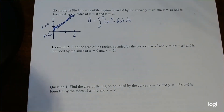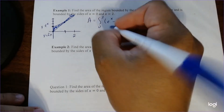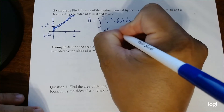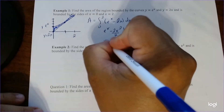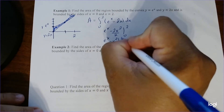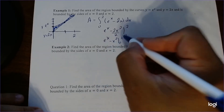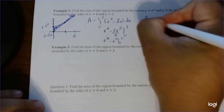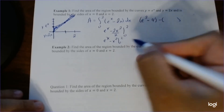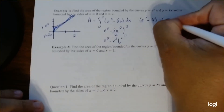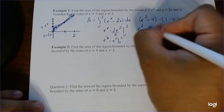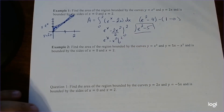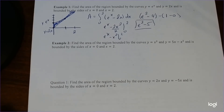Now we just take the integral and evaluate at those two values. The integral of e^x is e^x. The integral of 2x is 2x²/2, which simplifies. So we get e^x minus x², evaluated from 0 to 2. Plugging in 2: e² minus 4. Plugging in 0: e⁰ is 1, and 0² is 0, so that's just 1. So the area equals e² minus 4 minus 1, which is e² minus 5. You can leave it like that or compute the decimal value by plugging in e².